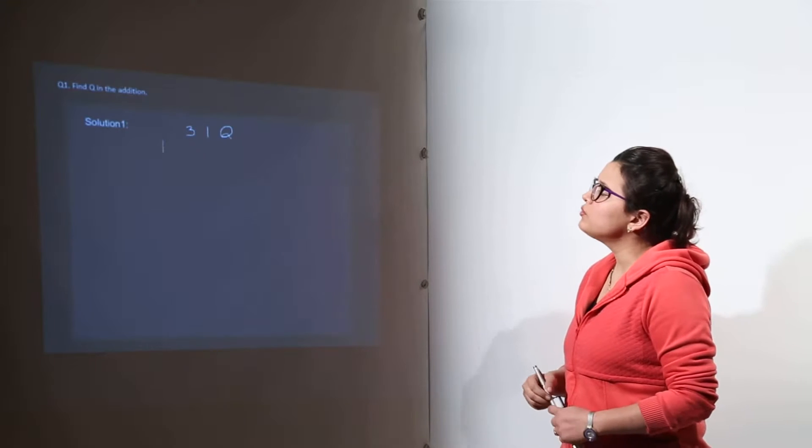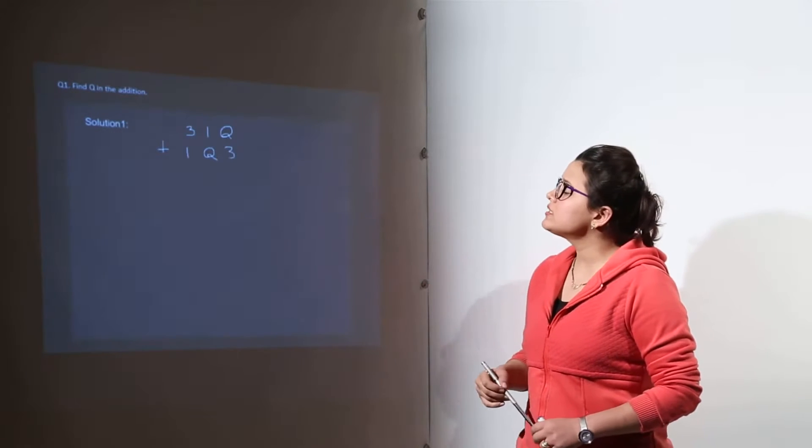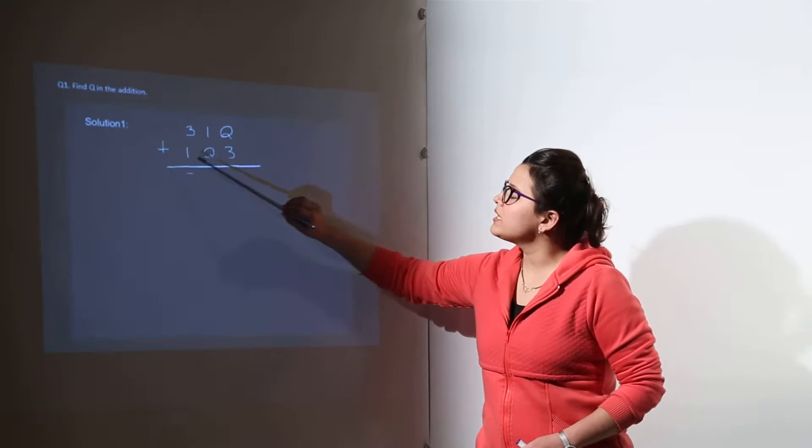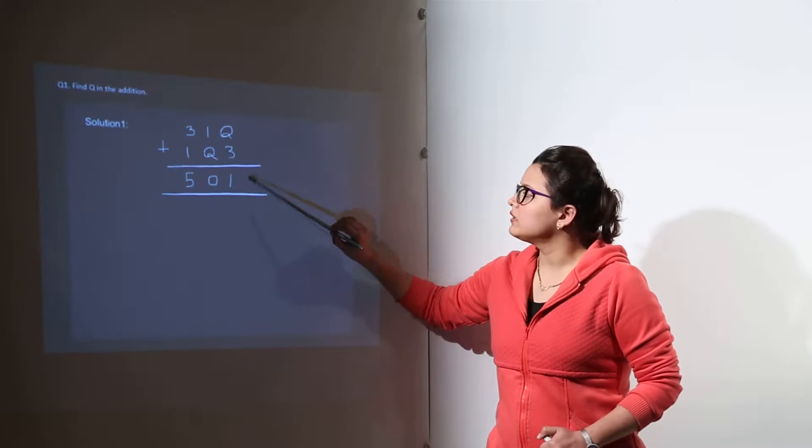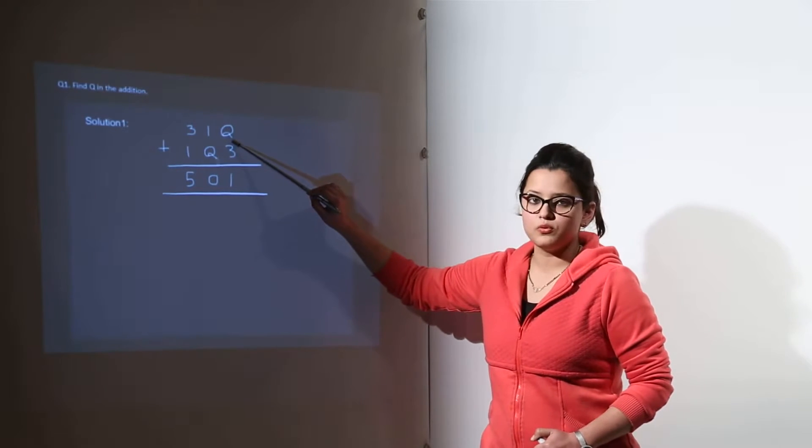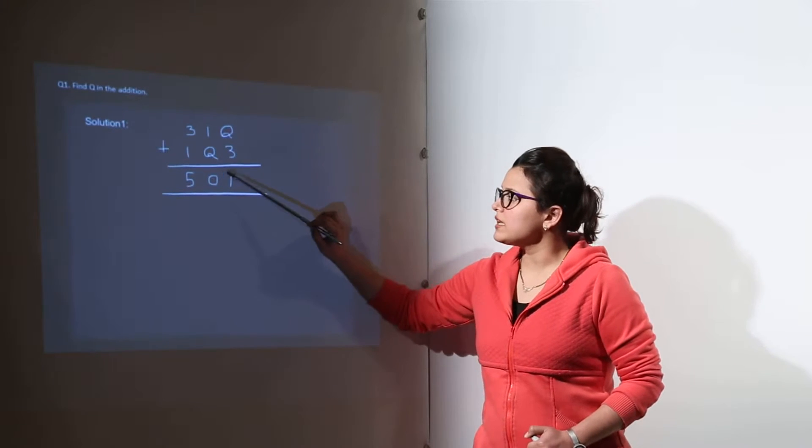Now the question is: you have to find q in this particular addition puzzle. The question is 31q plus 1q3 should equal 501. This is the puzzle given. You have to find the value of q such that you get 501 as the sum.